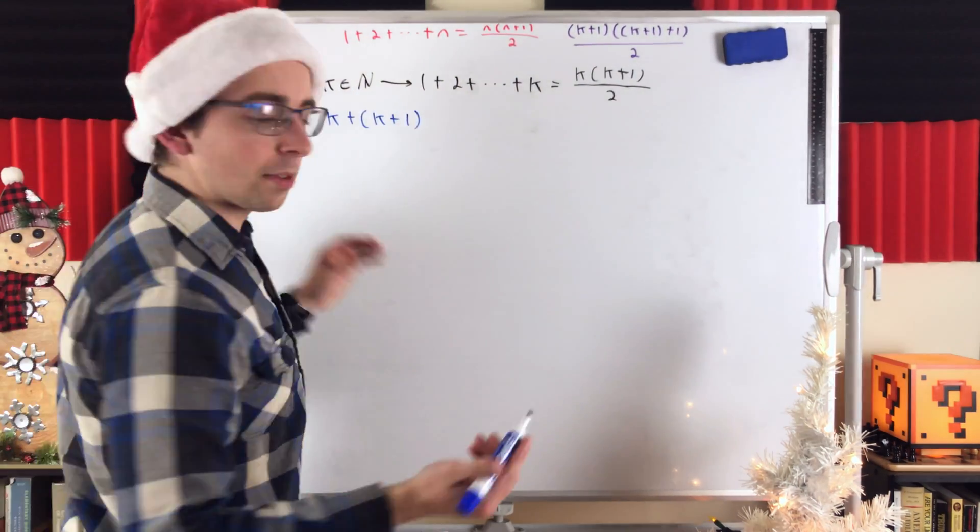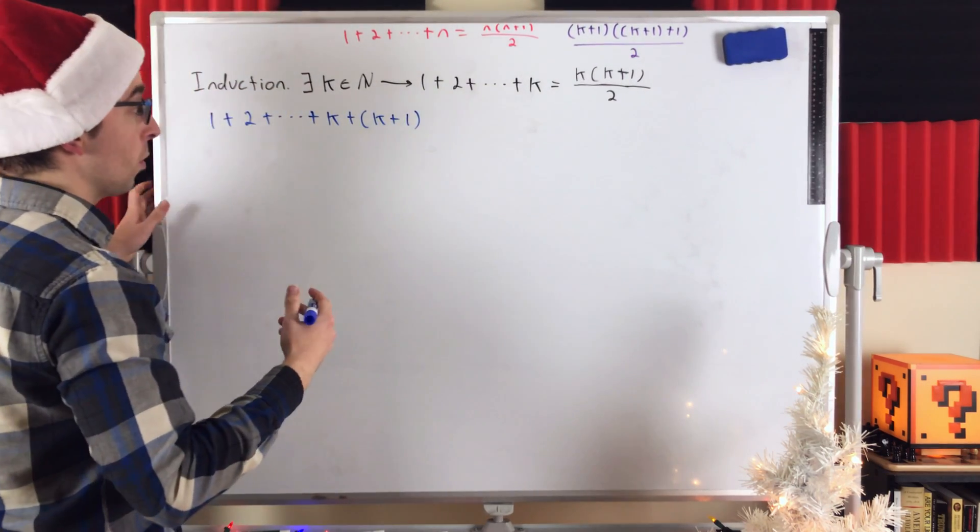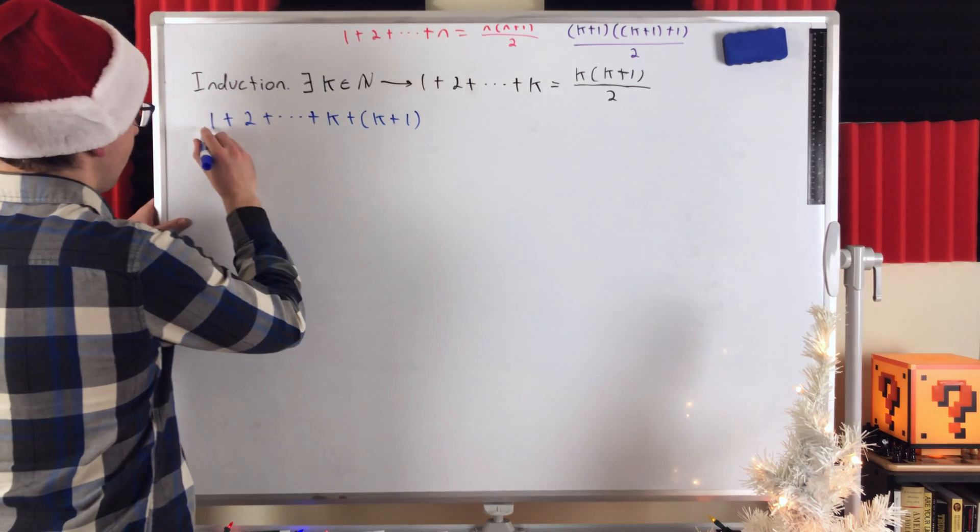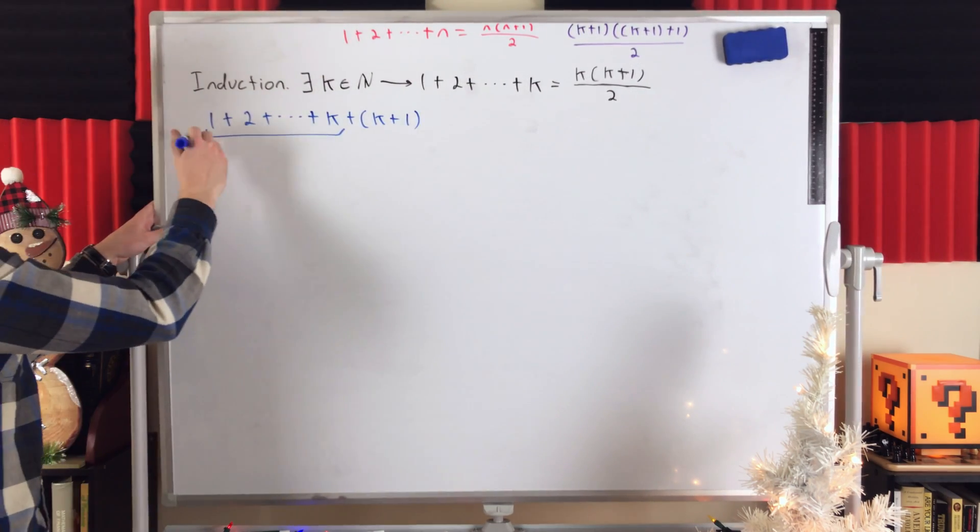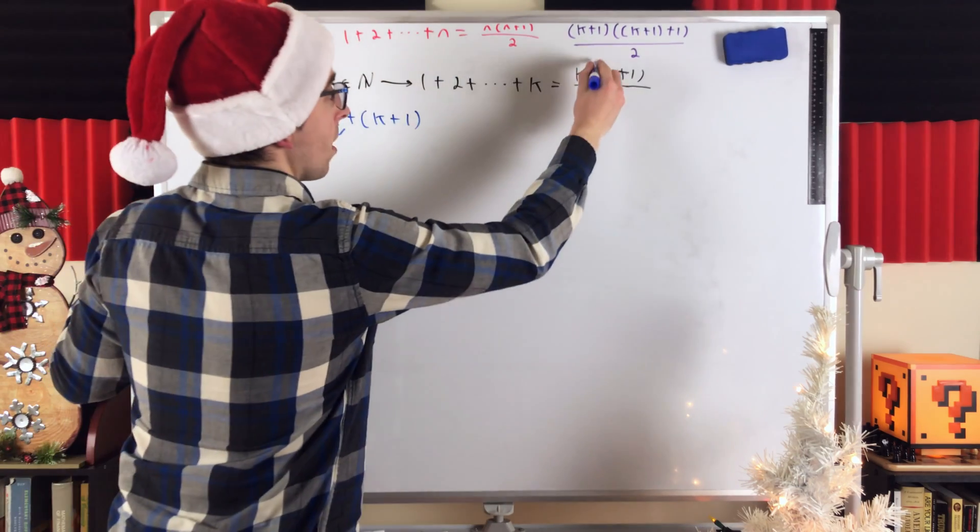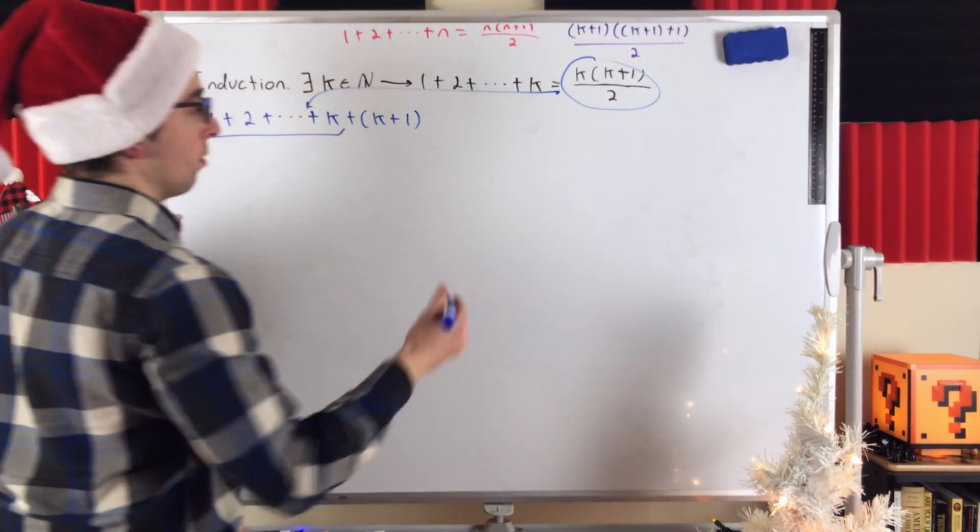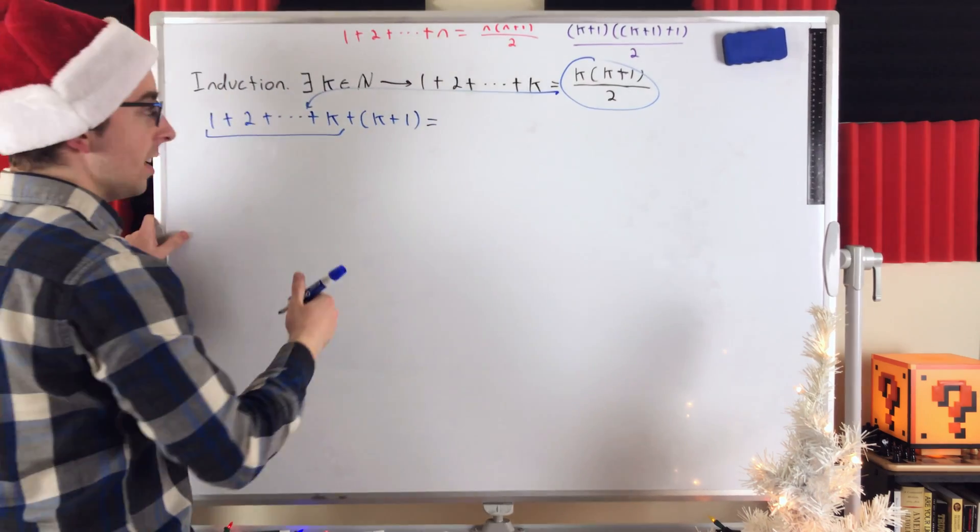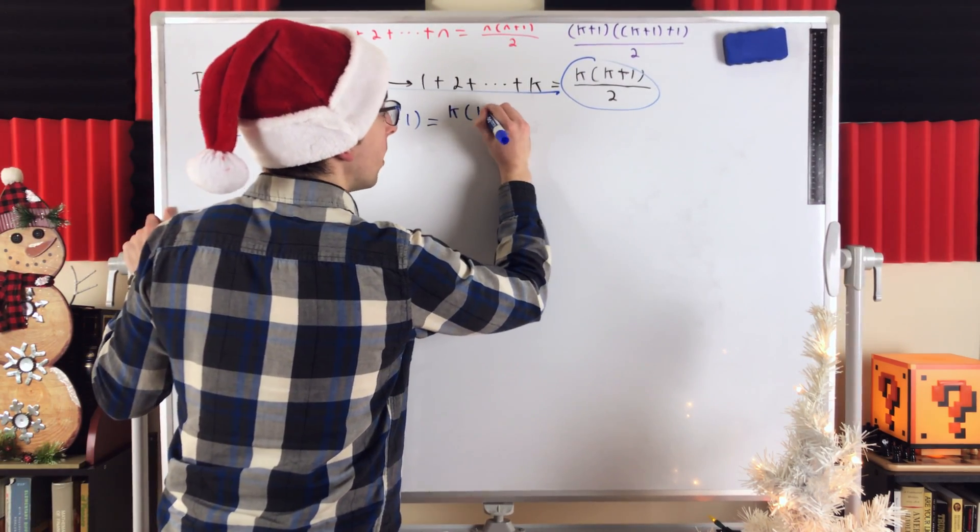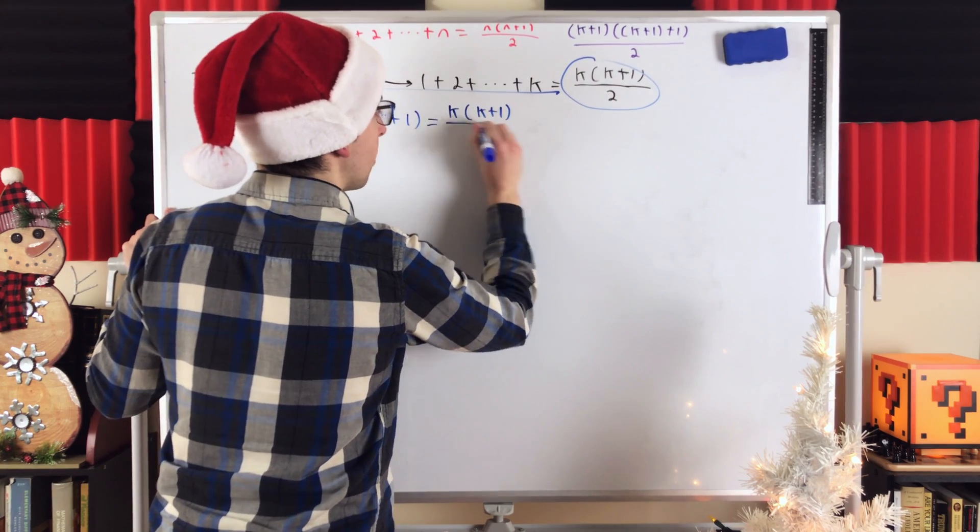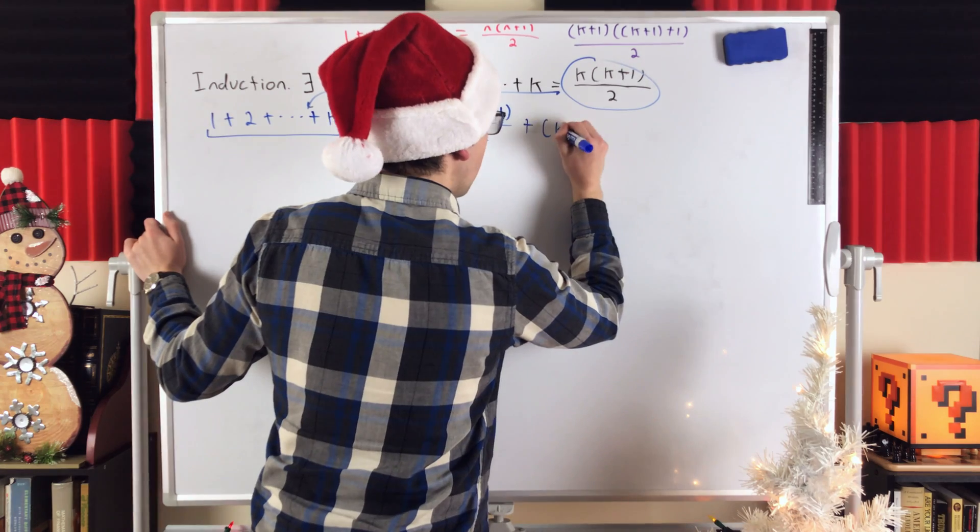Now, immediately, we can see some substitution pretty easy here. This isn't a fun thing to work with, so if we could simplify it, that would be nice, and we can, because in this sum is the sum of the first k counting numbers, which we already assumed is equal to that. So, we'll just pop it in there, do some substitution. So, this is equal to the sum of the first k counting numbers, which is k times k plus 1 divided by 2, and then we still got that plus k plus 1 at the end.